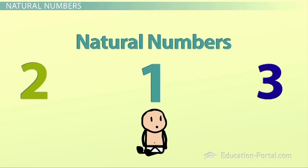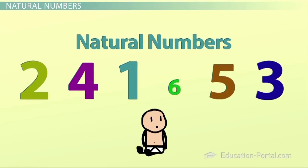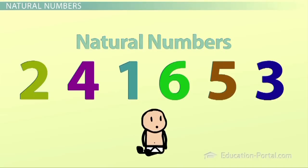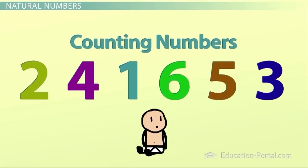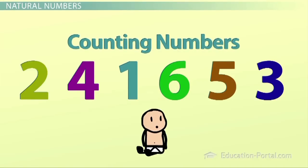Like one, two, three, four, five, six, and on and on and on. The natural numbers are also sometimes called the counting numbers because they're the first numbers you learn how to count.